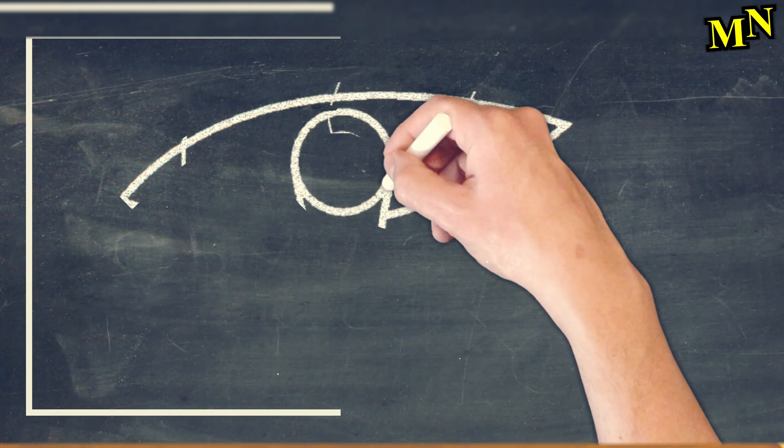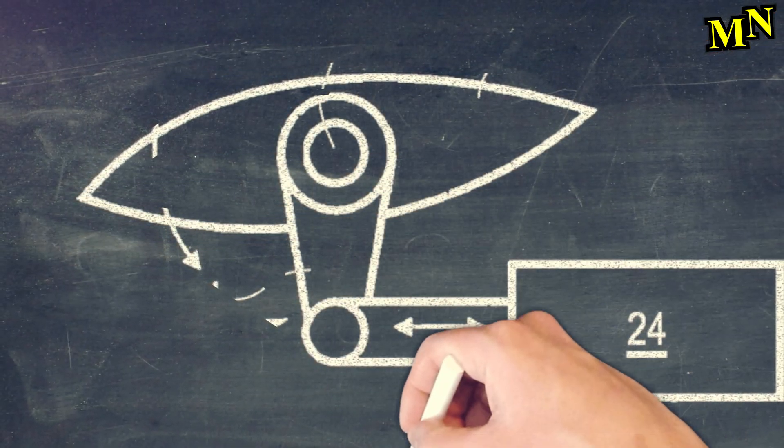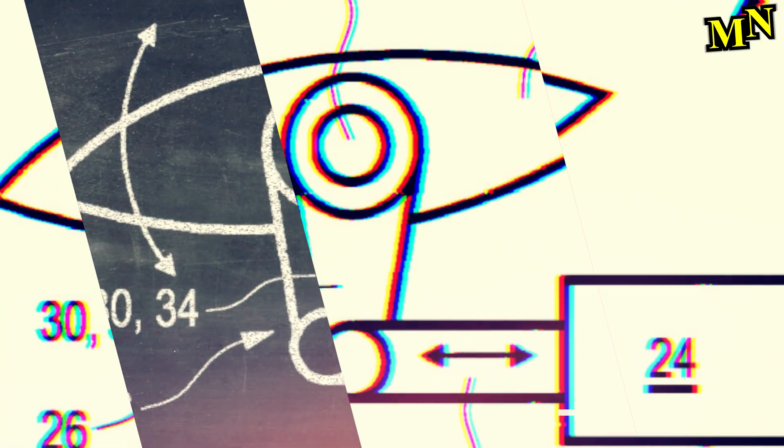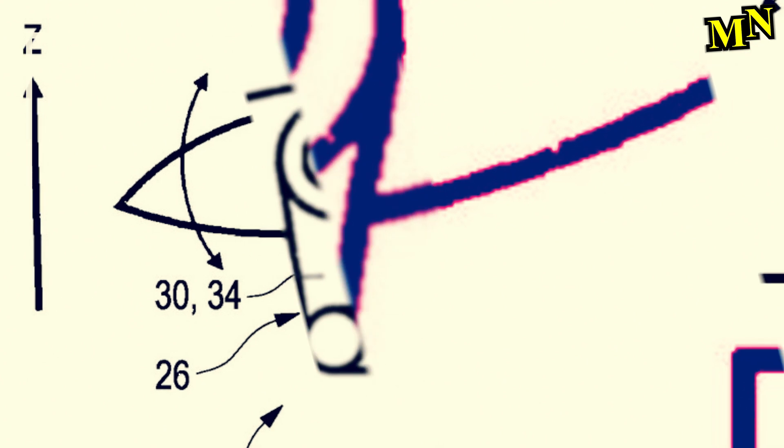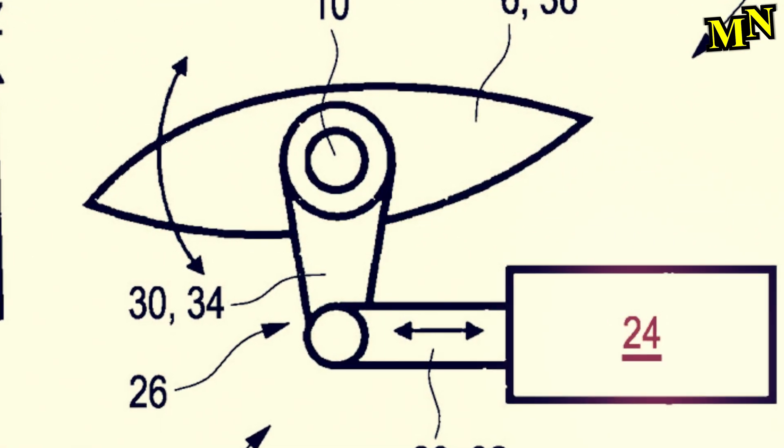Whether the winglets will be installed in a production motorcycle in such a way remains speculation. However, since the World SBK regulations now allow winglets as long as they are also present on the production motorcycle, movable winglets would be very conceivable in the future. But probably they will be limited to the homologation models for racing.